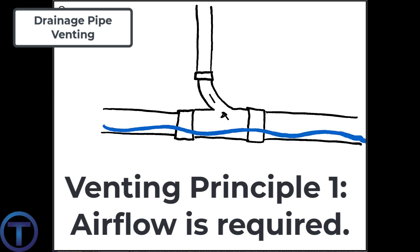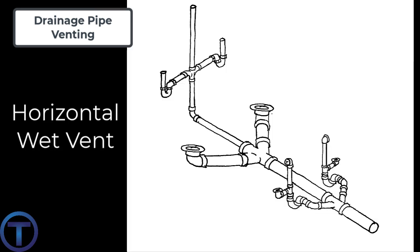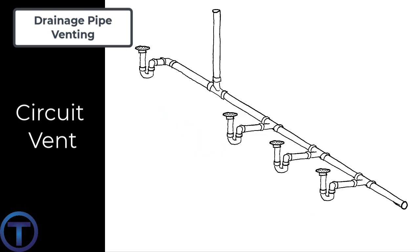As we continue to examine venting principles, please keep in mind the basic fact: drains need airflow in order for the waste in the drains to flow properly. The circuit vent operates the same as the wet vents because a portion of the drainage piping will be used both for a drain and a vent. The difference with the circuit vent is that it uses a dry vent to provide airflow.